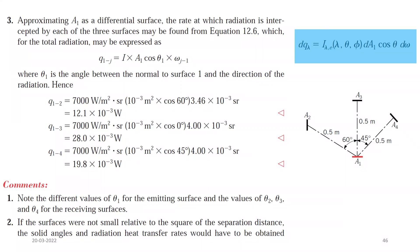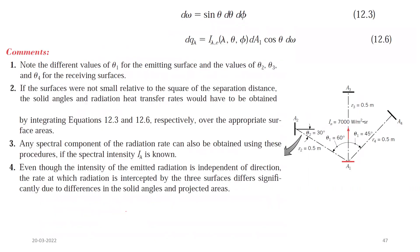In the last lecture, we were doing a numerical problem and there were certain comments. I am going to discuss those comments once again. The first one was: note that the different values of theta 1 for the emitting surface and the values of theta 2, theta 3, and theta 4 for the receiving surfaces. Let us see in the next slide. Theta 1 is equal to 60 degrees for area A1 and area A2, theta 1 is 45 degrees for A1 with respect to A4, and theta 1 will be equal to 0 with respect to surface A3.